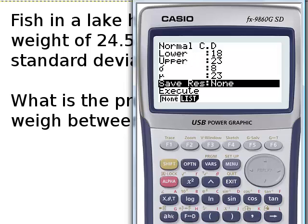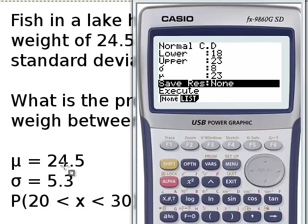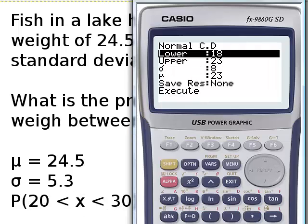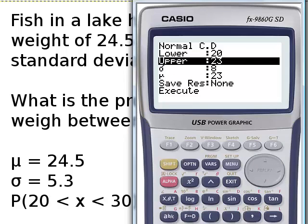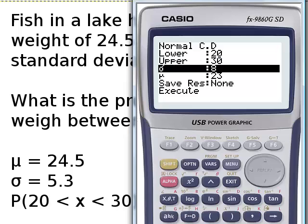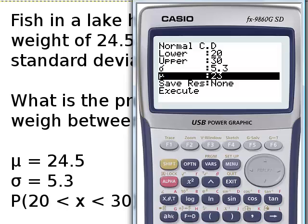And this time we're going to be finding with these parameters: our mean, our standard deviation, and that's our range. Our range is now 20 to 30. Our standard deviation is now 5.3, and our mean is 24.5.